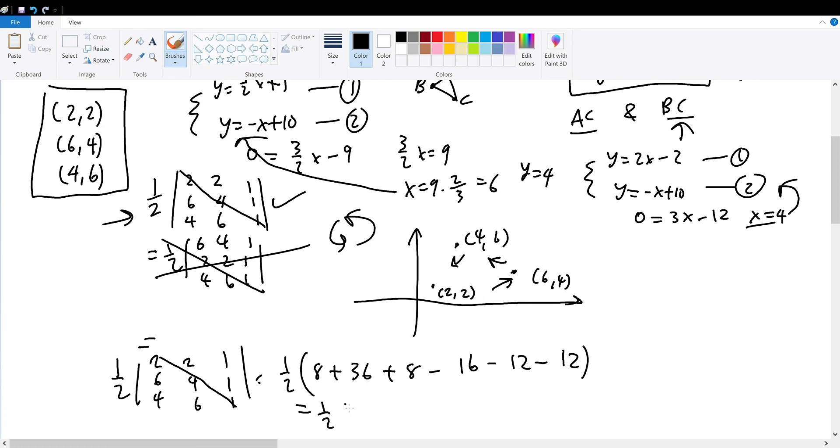This is 1/2 times 16 plus 36, combining the two 8s, minus 16, minus 24, combining the two negative 12s.